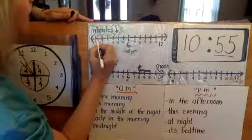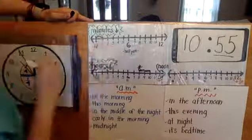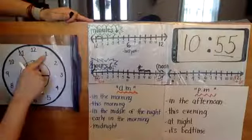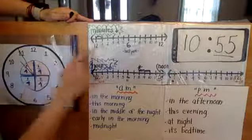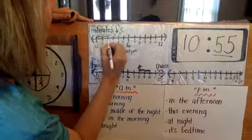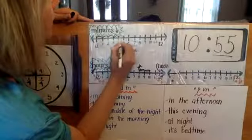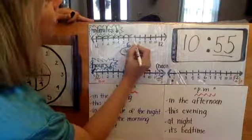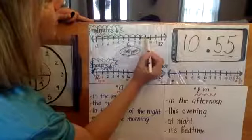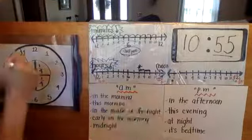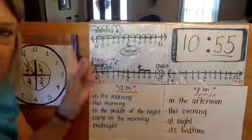What I forgot to do was hop our minutes. There are 60 minutes in getting to the next hour. We went from 8 to 9, 9 to 10, and now it's 10:55. Remember, there's 5 minutes in between 12 and each number on our clock. So, we're going to hop on our number line: 5, 10, 15, 20, 25, 30, which is half past, 35, 40, 45, 50, 55.